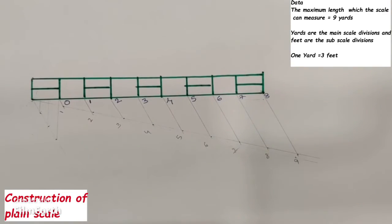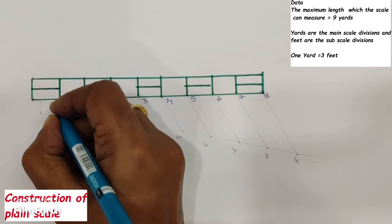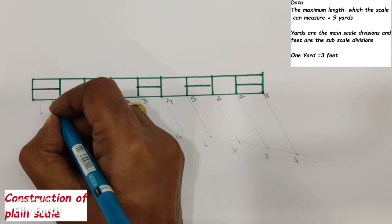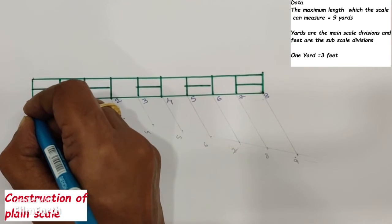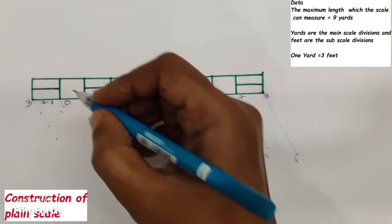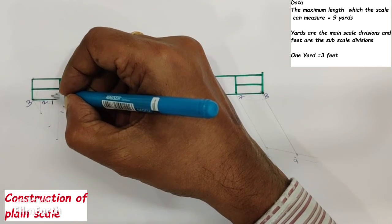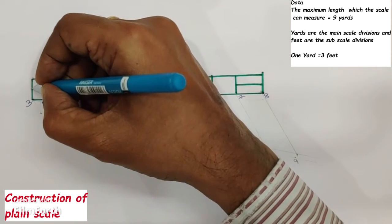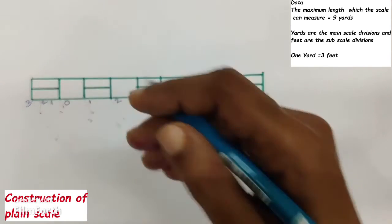Then number the subdivisions from 0 leftward: 1, 2, 3. From these subdivisions, draw perpendiculars to the horizontal bar.